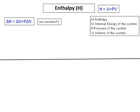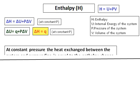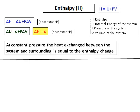We also know that the change in internal energy is equal to Q plus P delta V. Using this equation, the enthalpy equation can be modified as delta H equals Q. That is, at constant pressure, the heat exchange between the system and the surrounding is equal to the enthalpy change.